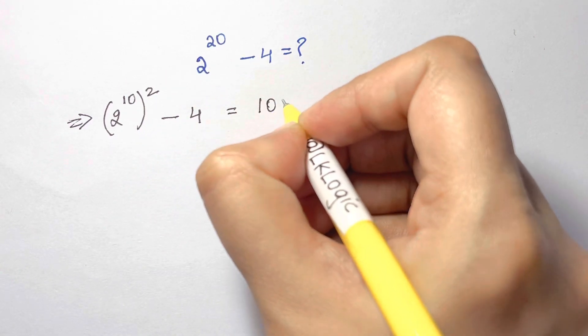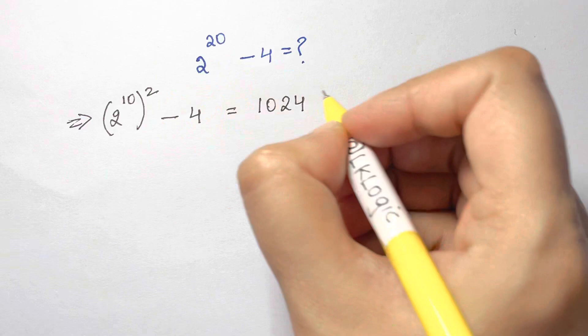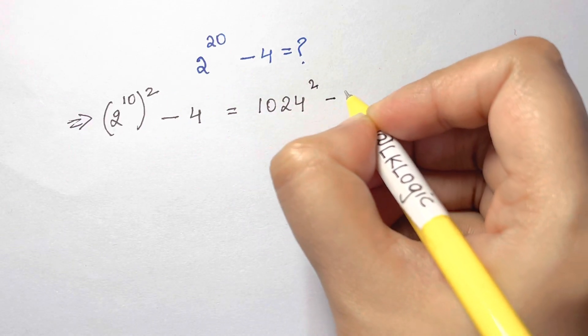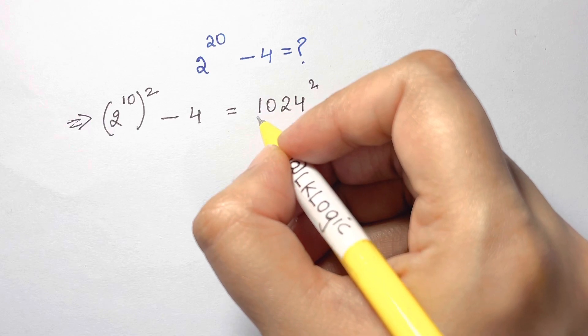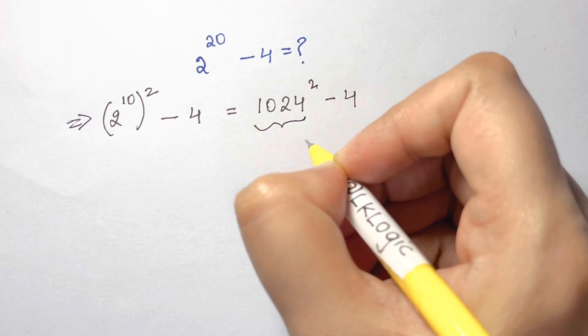Now this 2 to the power of 10 is equal to 1024, and we have a square, and then minus 4.